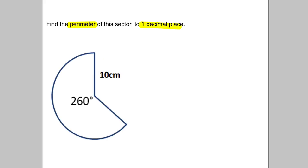Now the perimeter is the distance around the outside of the shape. It consists of two things: the curve distance here and two lots of the radius, the straight lines.